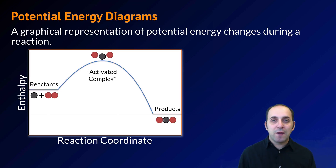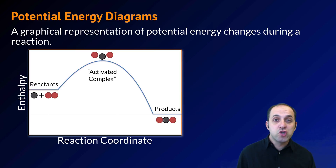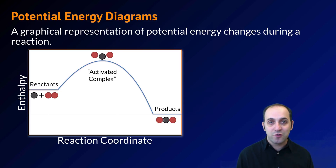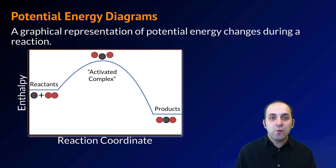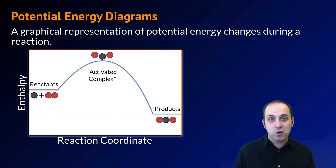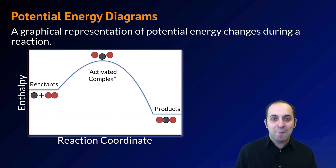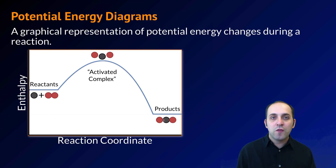A potential energy diagram is just a graphical representation of the changes in potential energy that occur during a reaction. We start with our reactants, we end with our products, and in the middle we get our reactants into a state called the activated complex. The y-axis shows some unit of energy — either enthalpy, labeled H, or potential energy — and then we have some unit of time at the bottom, or more generally, just the reaction coordinate.